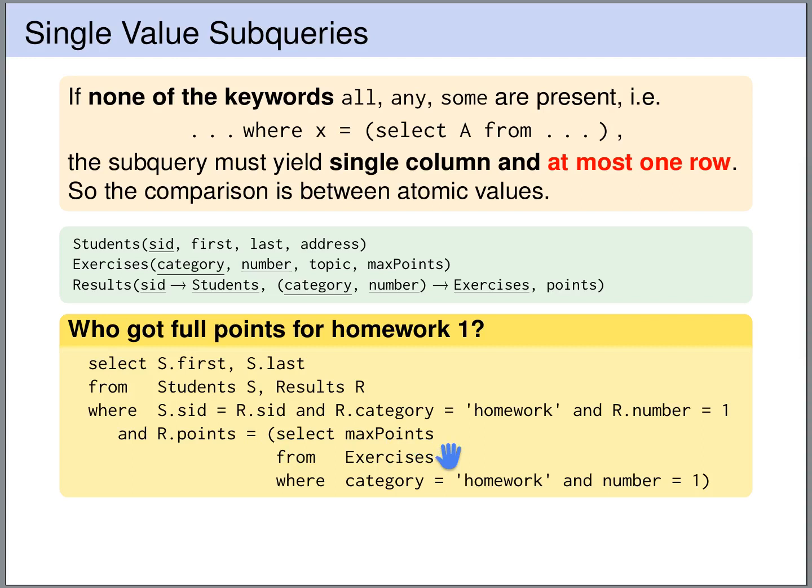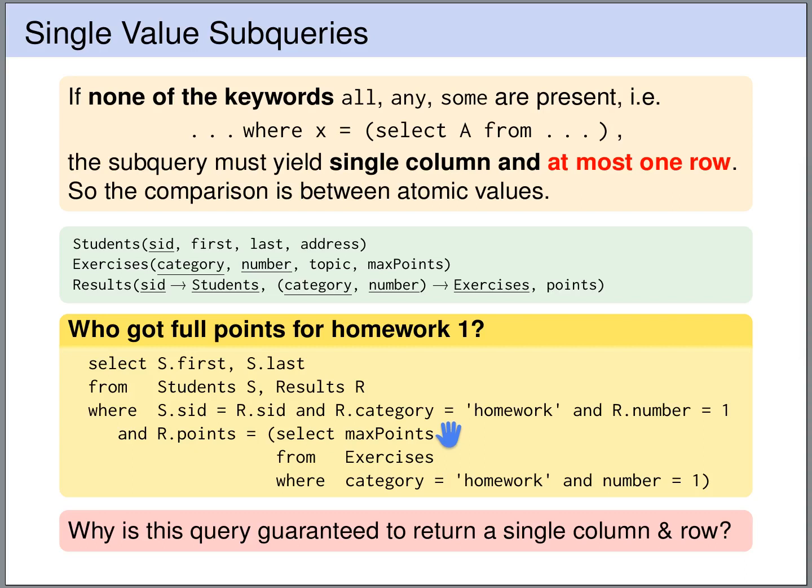So during execution of the query, the system will bring an error. So why does this query return a single value? Clearly it returns a single column, because we select only a single attribute.